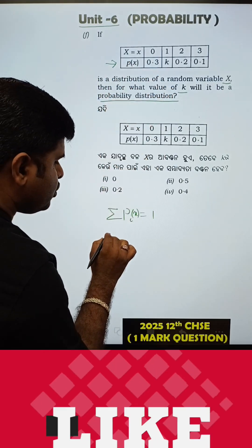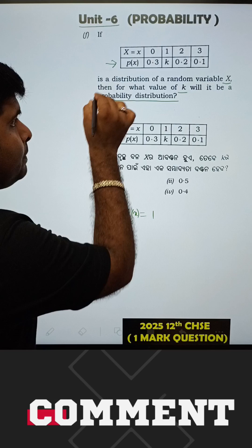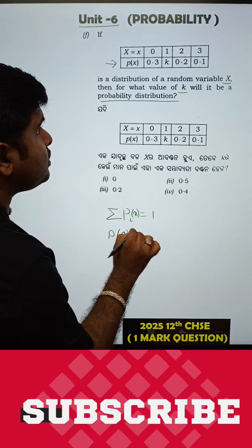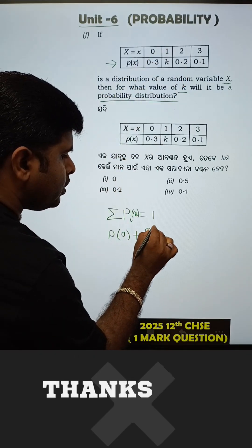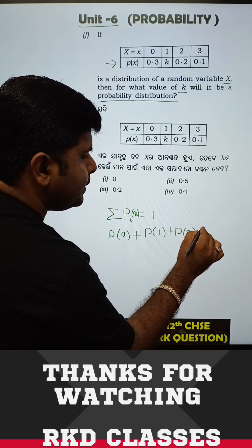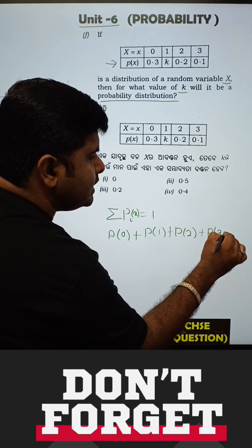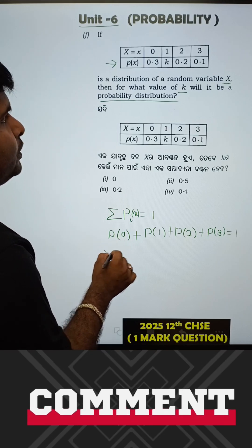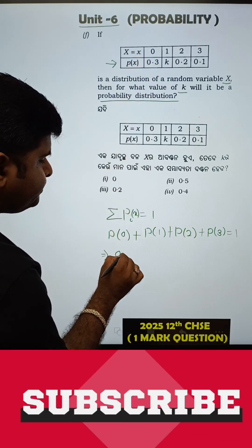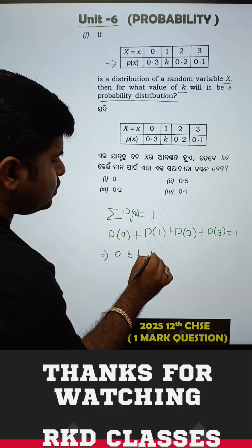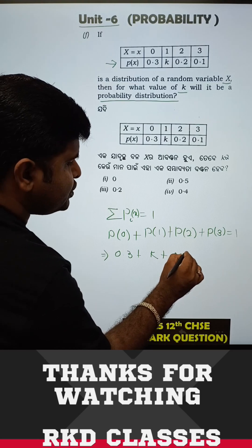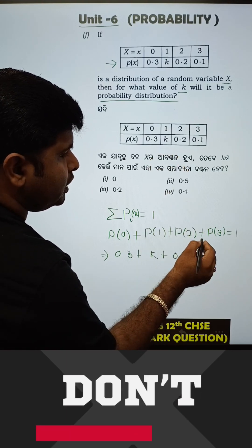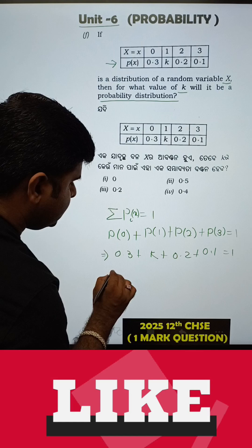How about P of 0? P of 1, P of 2, P of 3, this value is equal to 1. So P of 0, 0.3 plus P of 1, P of 2, 0.2, P of 3, 0.1 equal to 1.